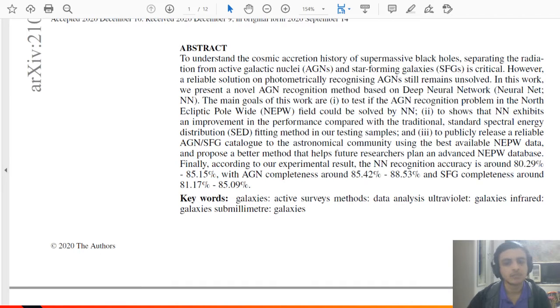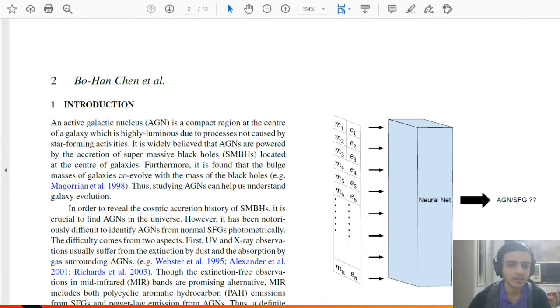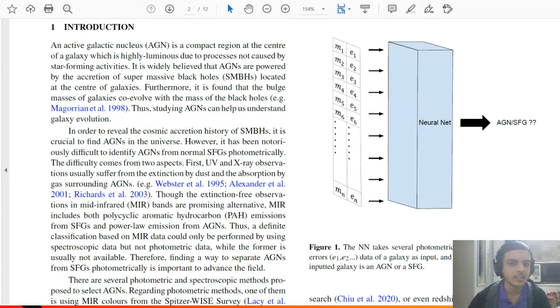Third mission is to publicly release a reliable AGN SFG catalog to the astronomical community. The data set that they do, the NEPW data set, that's not an open data set. So that's why you have to ask the institution. Maybe they'll give a subset or something of it.